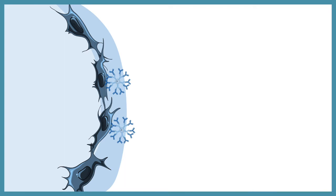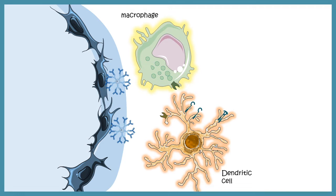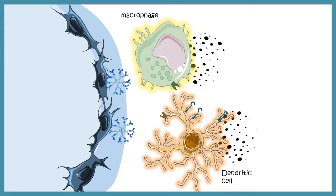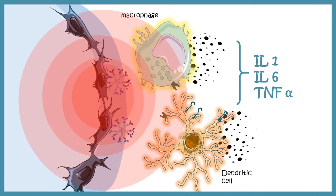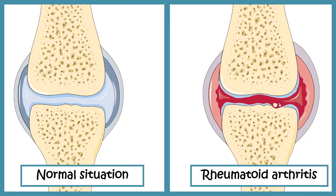These immune complexes attract phagocytic cells such as macrophages and dendritic cells, which engulf and attempt to clear the complexes. Once activated, these dendritic cells and macrophages secrete several cytokines, most of which are inflammatory — such as IL-1, IL-6, and TNF-alpha. Additionally, T helper 1 cells join in, further increasing inflammation. Compared to a normal joint, in rheumatoid arthritis the synovial membrane is damaged and thickened, with significant overall inflammation.